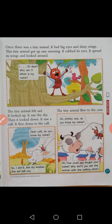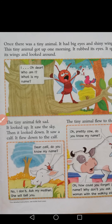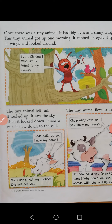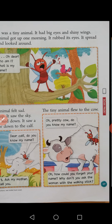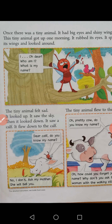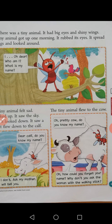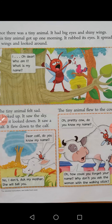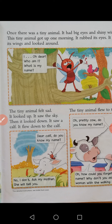I will give the model reading now — listen. Once there was a tiny animal. It had big eyes and shiny wings. This tiny animal got up one morning, it rubbed its eyes, it spread its wings and looked around. Oh dear — who am I? What is my name?